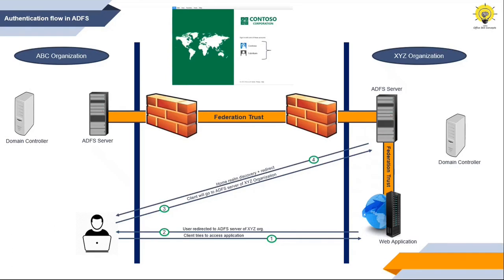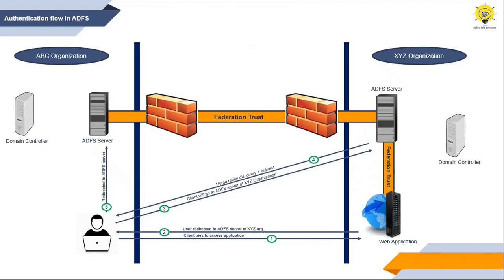The server will present the user with a web page to choose his organization name. For example, if the user belongs to Contoso organization, the user will click his organization name and be redirected to his organization's ADFS server. This is called home realm discovery. In the fifth step, the user will select his organization from the web page, enter his credentials, and be redirected to his organization's ADFS server. Then the ADFS server will contact the domain controller to validate the user.